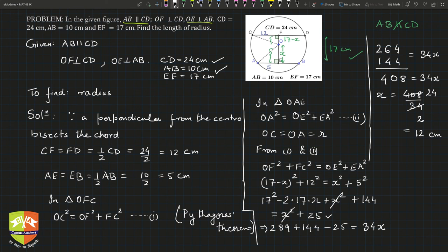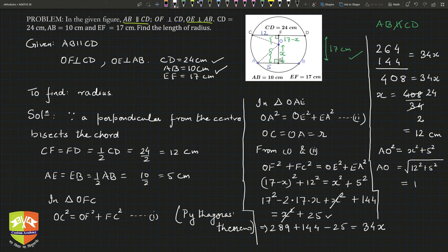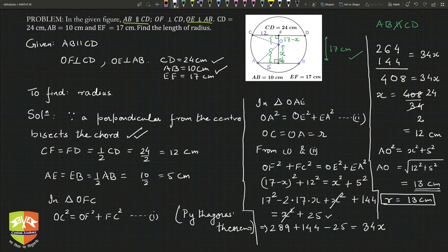With x = 12 centimeters, we can now find the radius. AO² = OE² + EA² = x² + 5² = 12² + 5². Since 12 and 5 are part of the Pythagorean triplet (5, 12, 13), AO = 13 centimeters. So r = 13 centimeters. The key learnings: the perpendicular from the center bisects the chord, application of Pythagoras' theorem, and equating two conditions to find the answer.